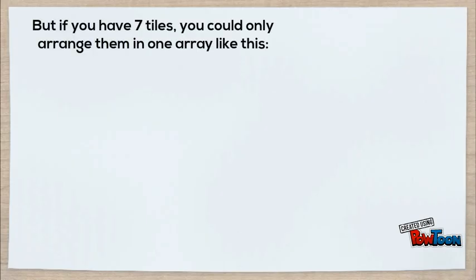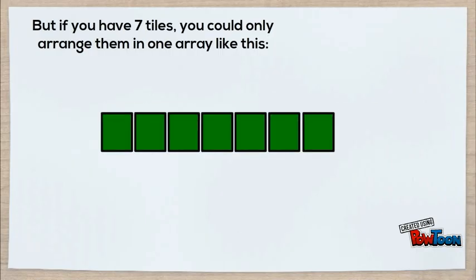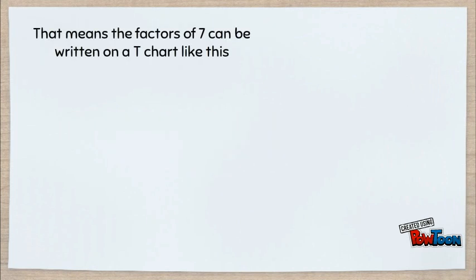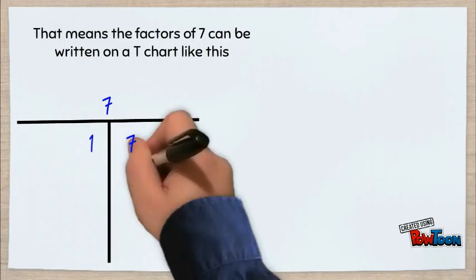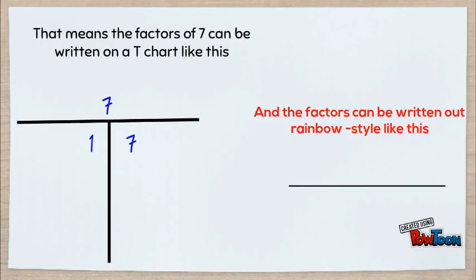But if you have 7 tiles, you can only arrange them in one array like this: 1 by 7. This means the factors of 7 could be written out on a t-chart like this, and the factors can be written out rainbow style like this.